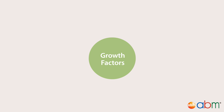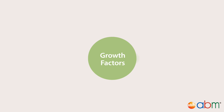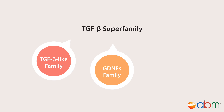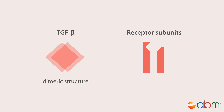Growth factors can also be divided into various families or superfamilies based on structural and functional characteristics. An example of a major growth factor family includes the transforming growth factor beta superfamily. In this example, all family members have dimeric structures and heterodimeric receptor complexes consisting of type 1 and type 2 receptor subunits with serine or threonine kinase domains.